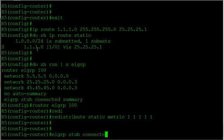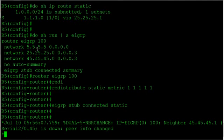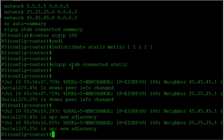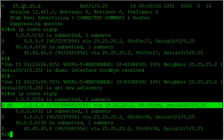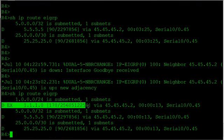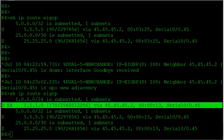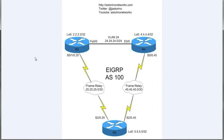Going back to router 5 and modifying the stub command: 'eigrp stub connected static'. This bounces our adjacencies. Now because we added the 'static' keyword, the redistributed static route shows up on router 2, and we see the same on router 4. The main things to remember for EIGRP stub: it helps with router efficiency by not sending active queries when a route is lost, saving processing and memory resources, and it prevents transit routing through the WAN between headquarters routers.